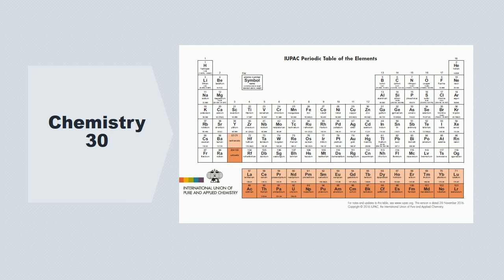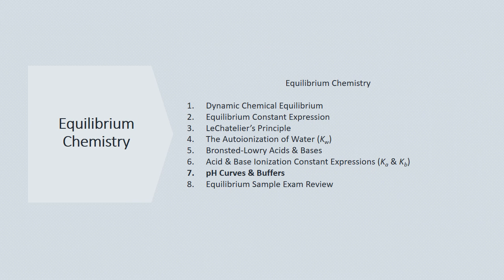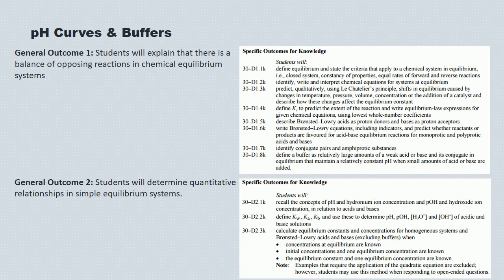Hello and welcome to my last lecture in equilibrium chemistry. Today we're going to look at the concept of pH curves and buffering systems. These are the knowledge outcomes prescribed by Alberta Learning, and they form the basis for the bulk of diploma exam questions that you'll see. Hopefully you've been referring back to this page to get a sense of how well you're mastering the material.